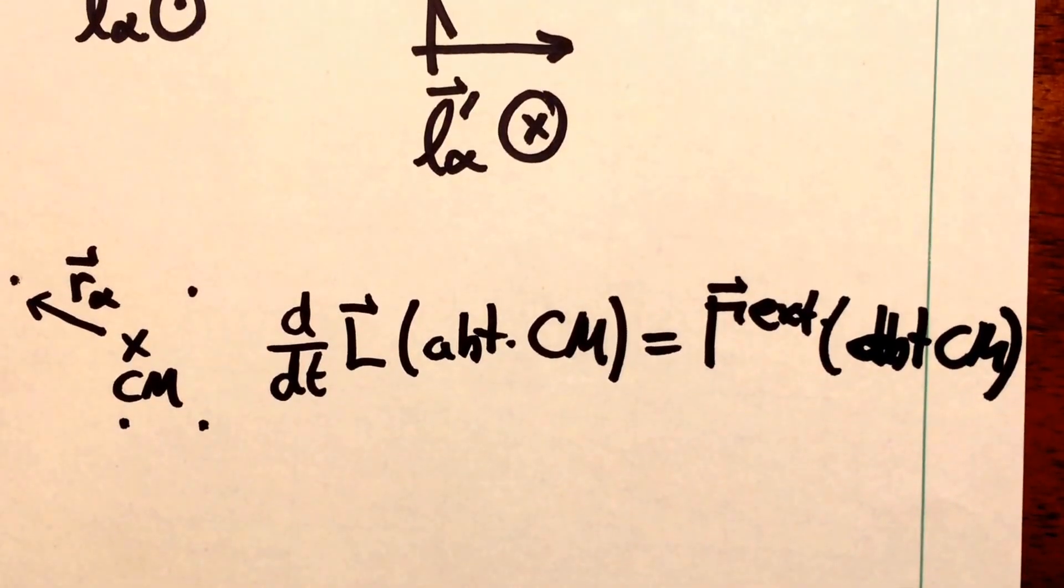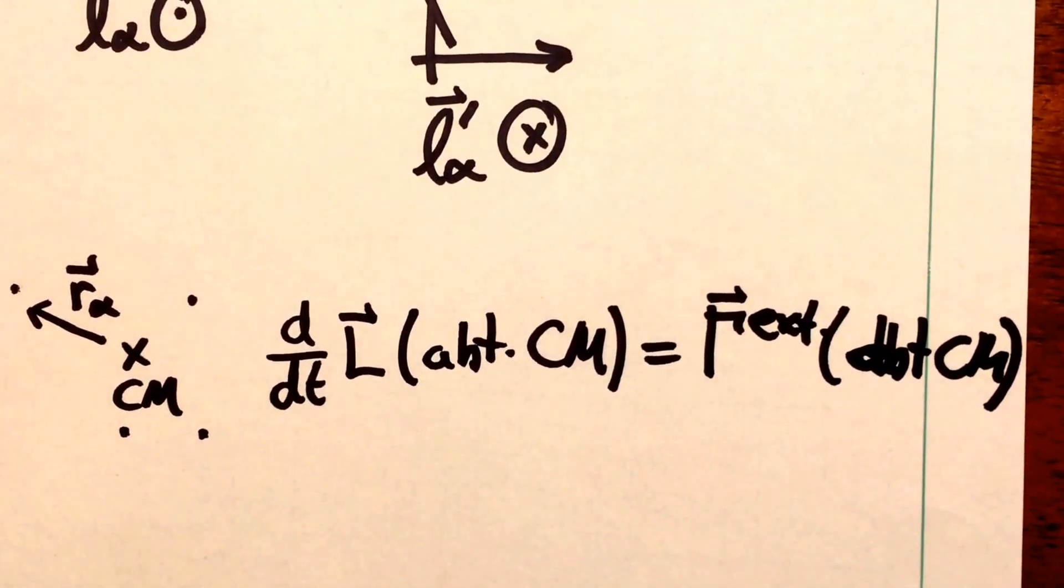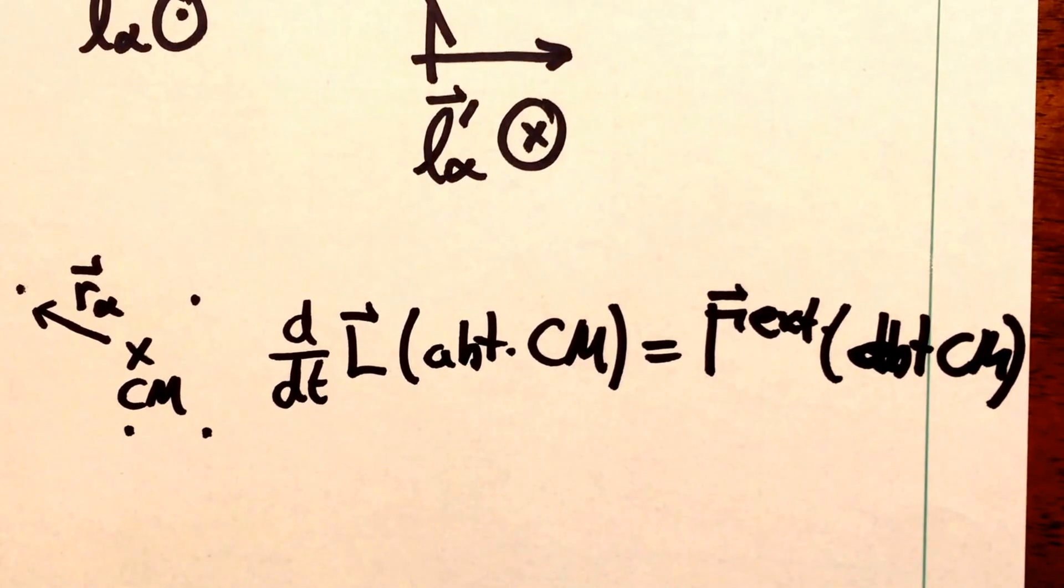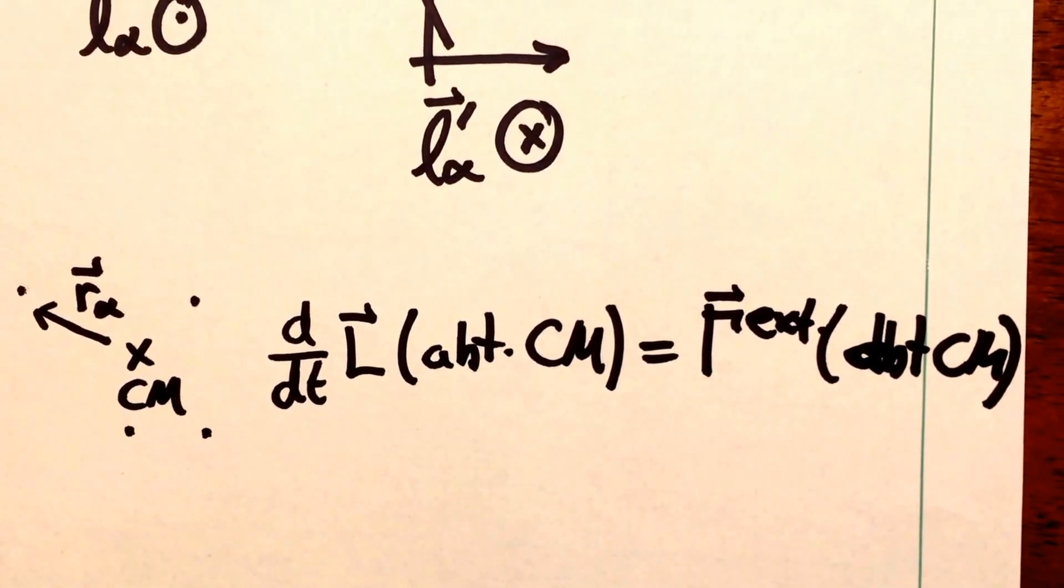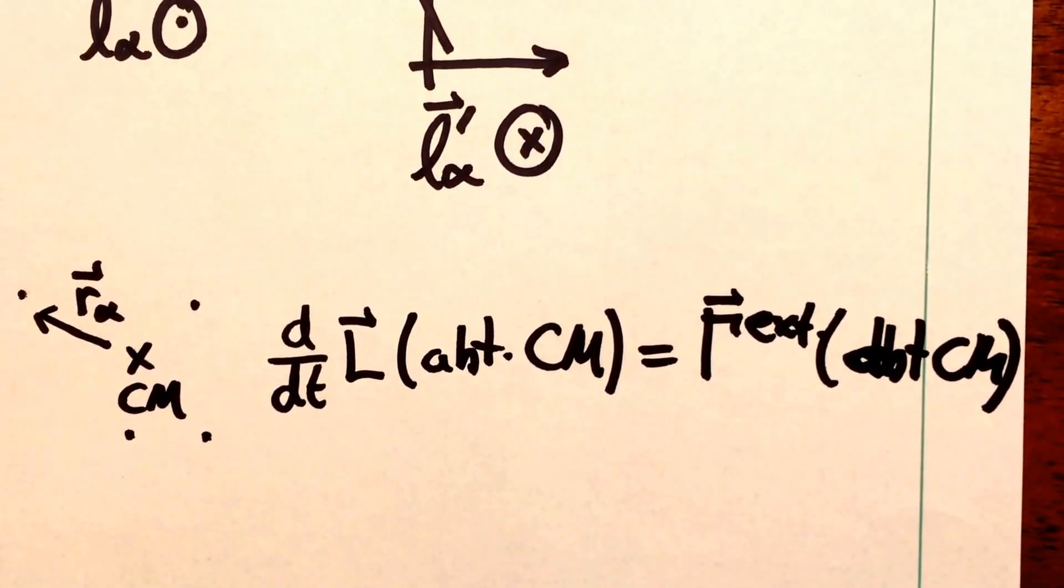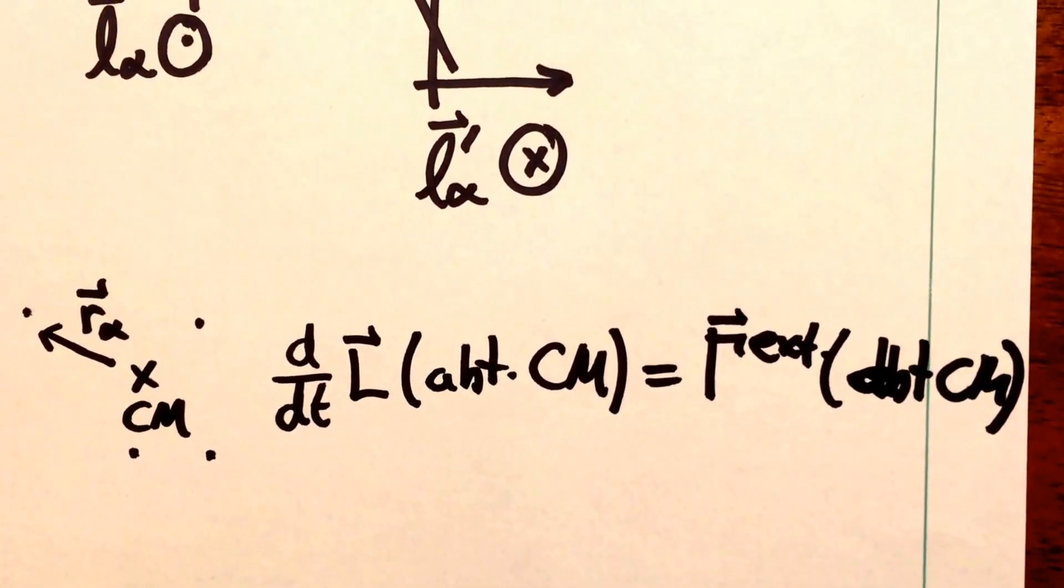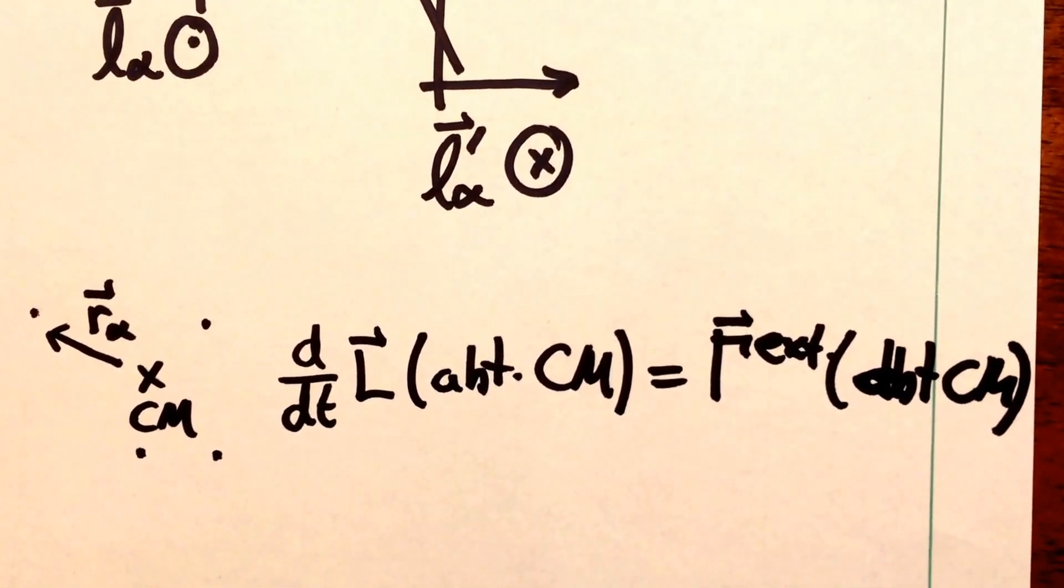One very natural coordinate system to choose when looking at these angular momentum problems is the coordinate system attached to the center of mass for the system. And as it turns out, any changes in the total system's angular momentum as measured about the center of mass are equal to the external torques as measured about the center of mass.